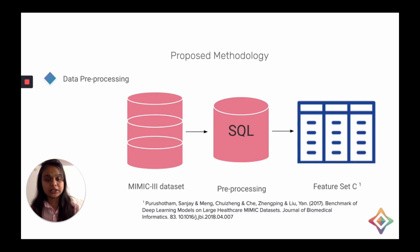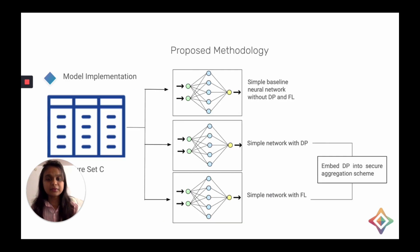Our proposed methodology has two major steps. First is data preprocessing: we use the MIMIC-3 dataset, a large single-center dataset containing clinical information of patients admitted to critical care units, and go through preprocessing steps as discussed in the paper by Sanjay et al., obtaining feature set C, a processed subset of the original dataset. Next, we implement three different models: a simple baseline neural network without DP and FL, a simple network with a DP mechanism, and a simple network with federated learning. At the final stage, we embed the DP mechanism into the federated learning-based neural network through a secure aggregation scheme.